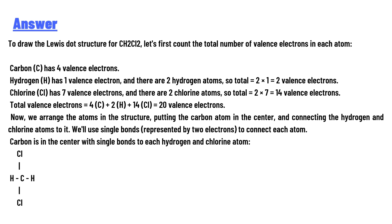Now we arrange the atoms in the structure, putting the carbon atom in the center and connecting the hydrogen and chlorine atoms to it. We'll use single bonds, represented by two electrons, to connect each atom. Carbon is in the center with single bonds to each hydrogen and chlorine atom.